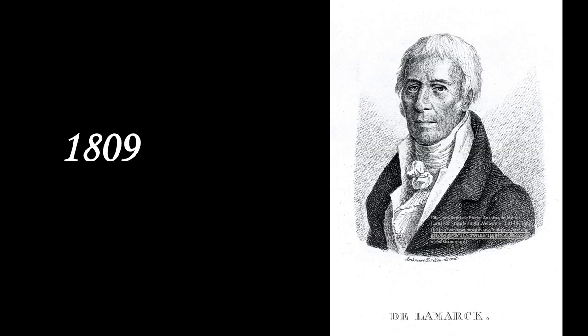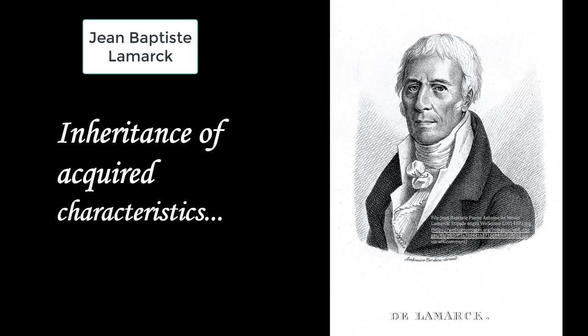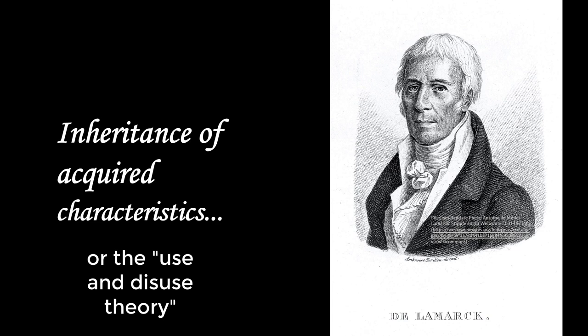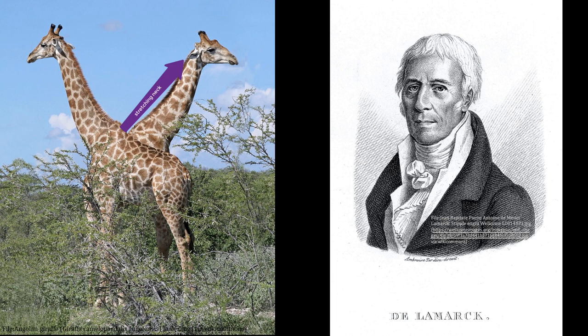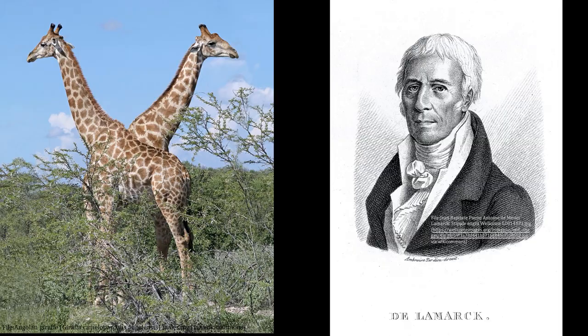Charles Darwin was born in 1809, which happens to be the same year that the French biologist Jean-Baptiste Lamarck published his theory on evolution, which is often summarized as the inheritance of acquired characteristics or the use and disuse theory. For example, a giraffe stretching its neck its whole life would end up with a longer neck, and then when it reproduced, it would pass on this longer neck to the baby giraffes, thereby passing on the acquired traits to its offspring.